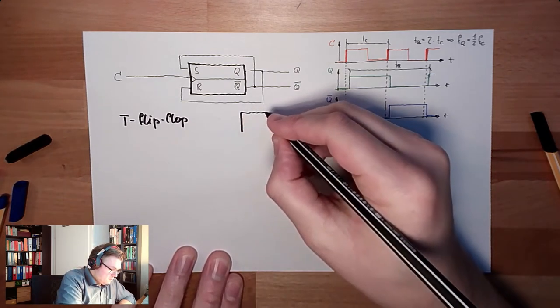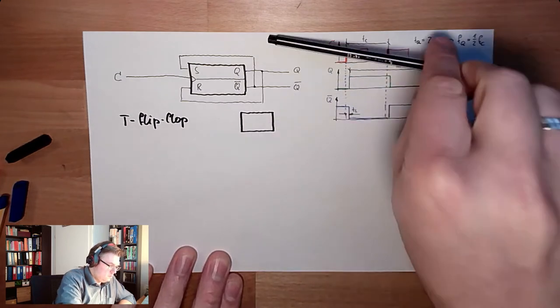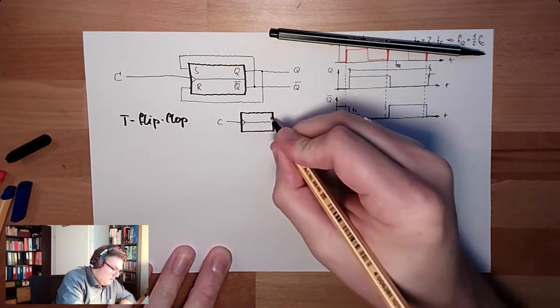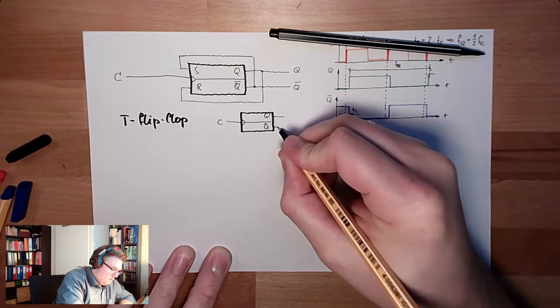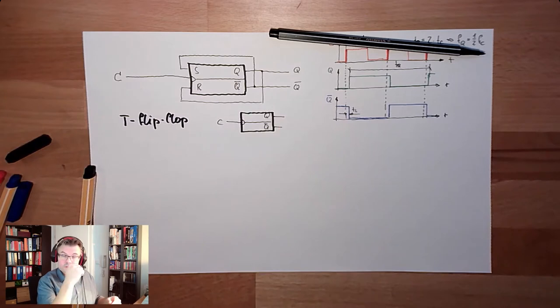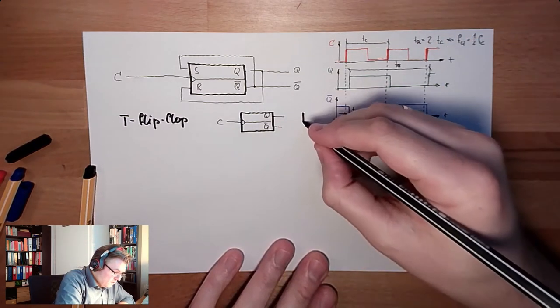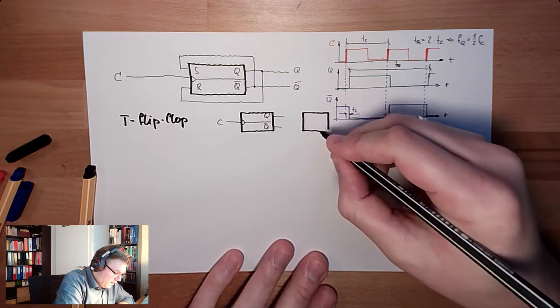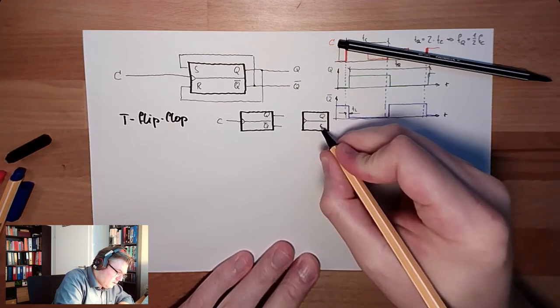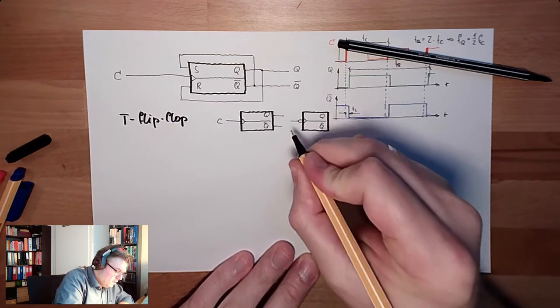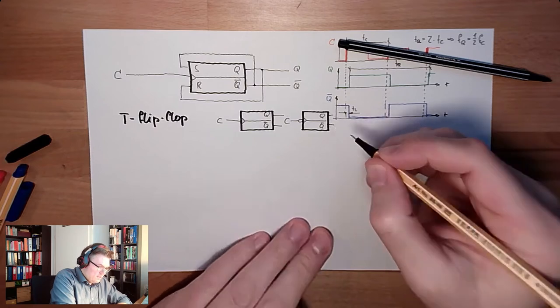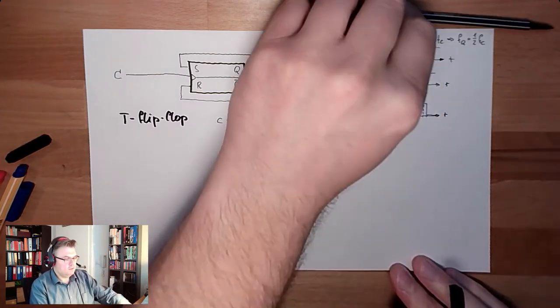There is a certain symbol of this. Looking like this. There is a C, Q, Q inverted. One possibility, it's exactly this in only one symbol. And another possibility would be to trigger on the falling edge. So, the symbol looks exactly the same. But, here we have this small circle. This is rising edge trigger, falling edge trigger.